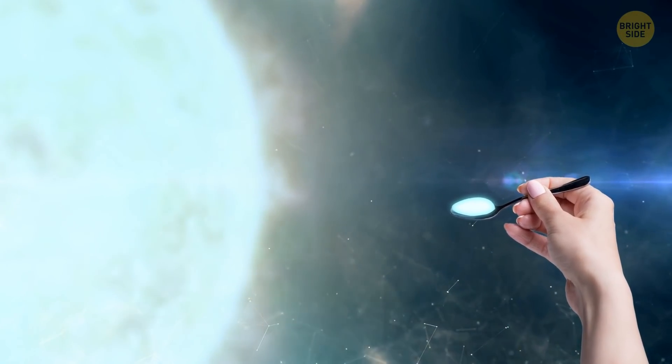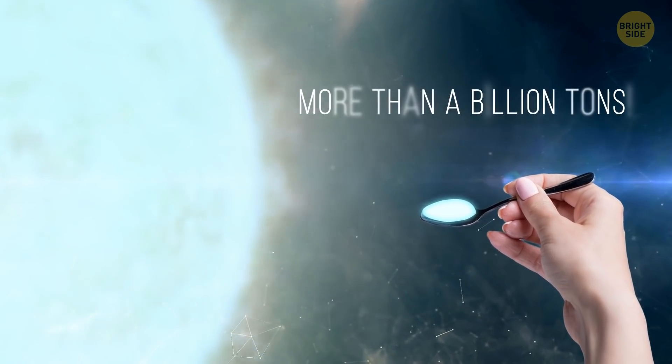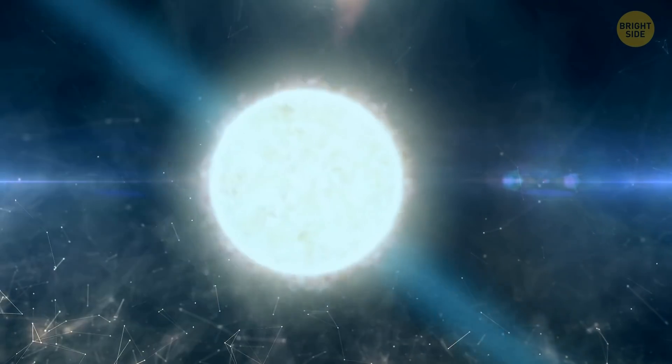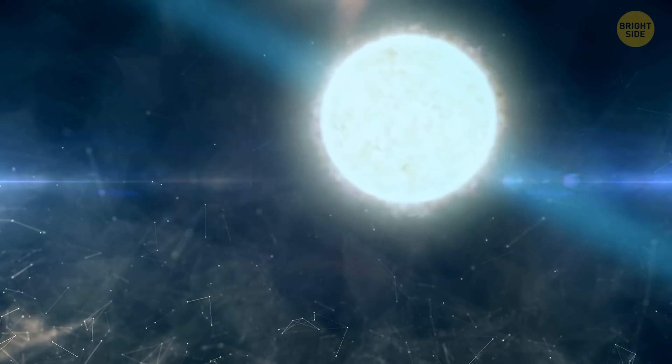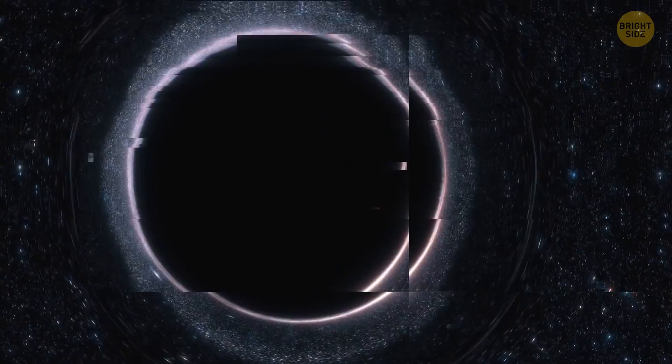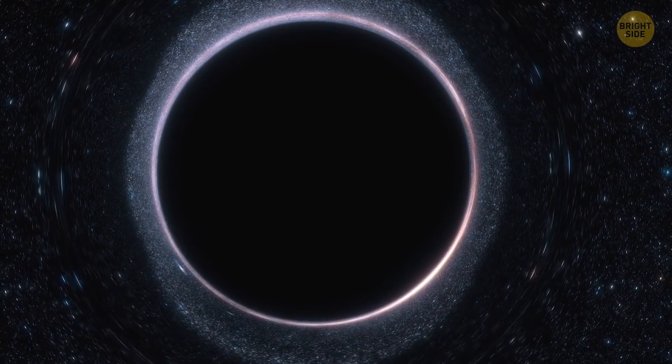If you scooped just a teaspoon of this star's insides, this matter would weigh more than a billion tons. That's so dense that it makes neutron stars some of the most extreme objects people know about. The next stop is the black hole itself.